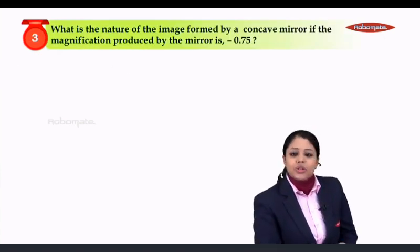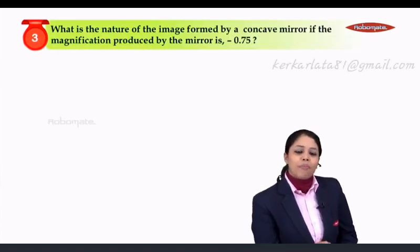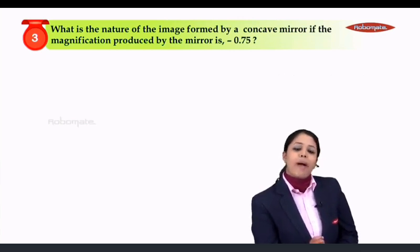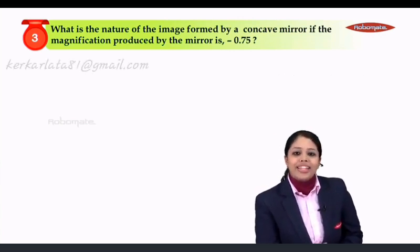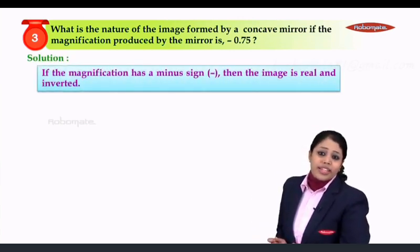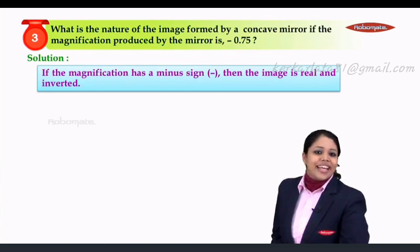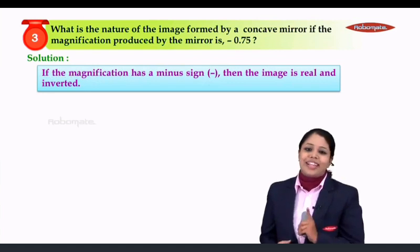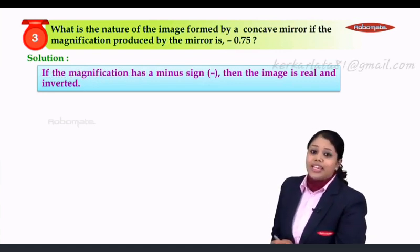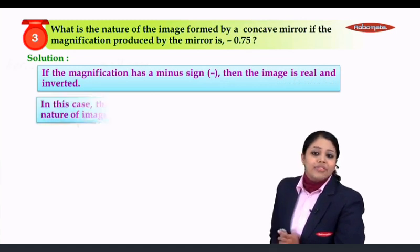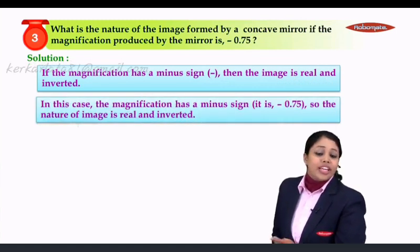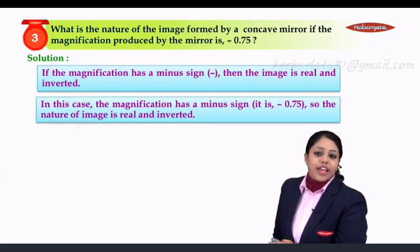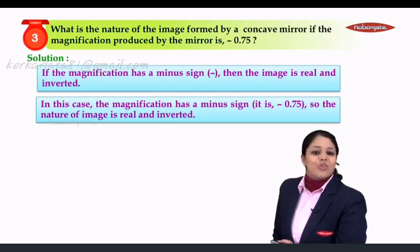Let us move to the third question. What is the nature of the image formed by a concave mirror if the magnification produced by the mirror is minus 0.75? If the magnification has a minus sign, then the image is real and inverted. If it has a plus sign, the image is virtual and erect. In this case, the magnification is minus 0.75, so the image is real and inverted. And since the value is less than 1, the image is also diminished.